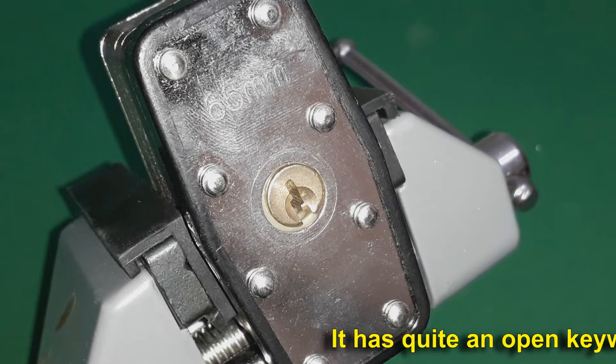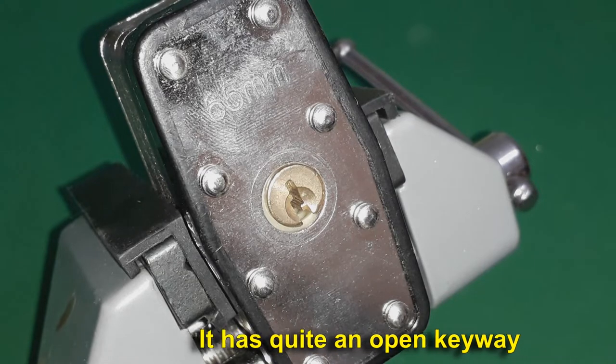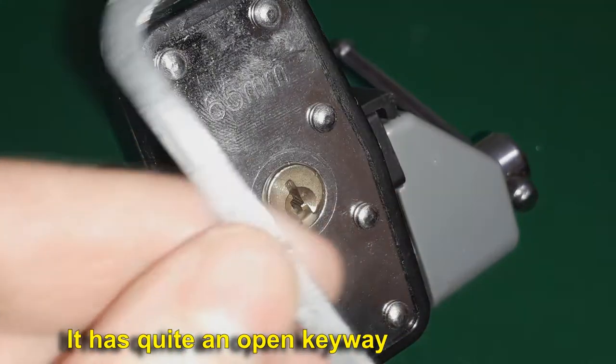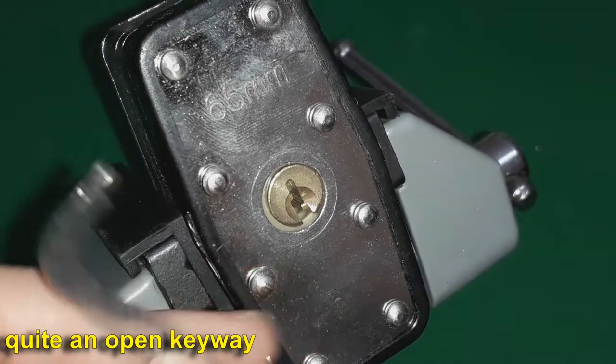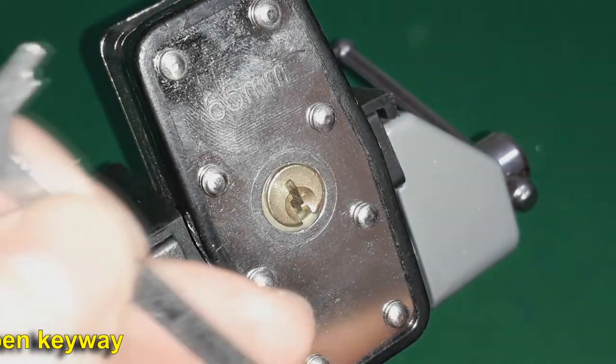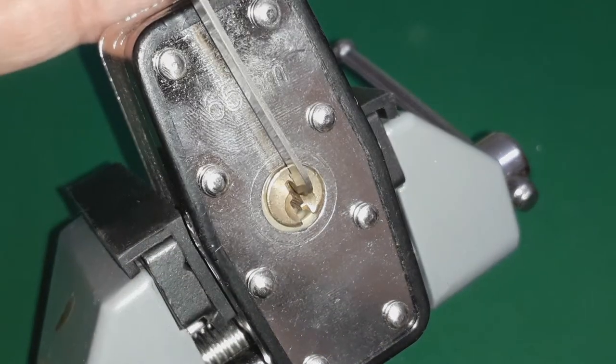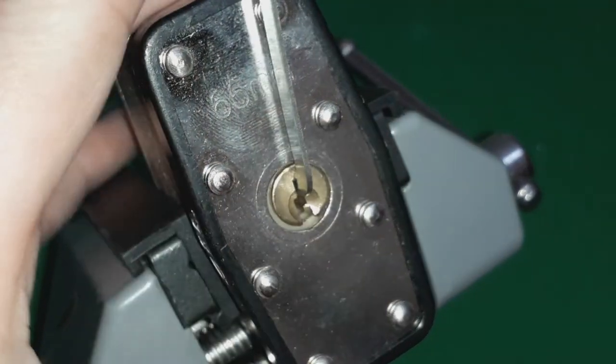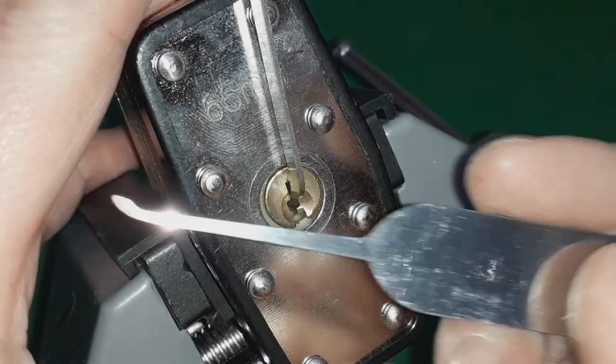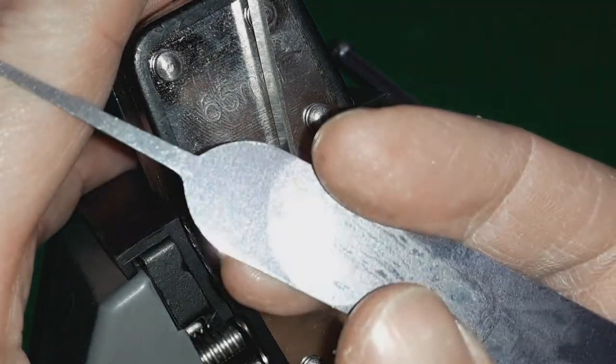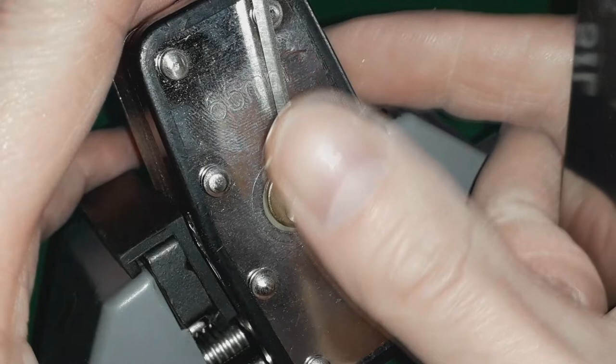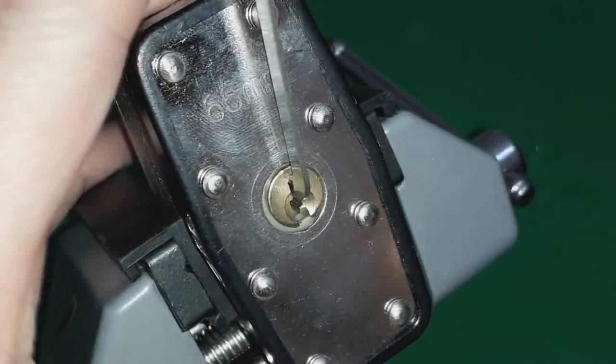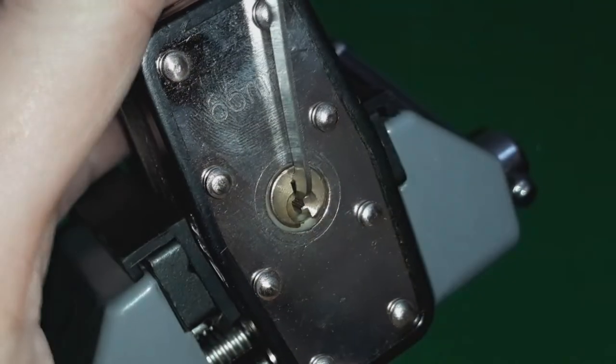So I'm choosing the top of the keyway and I think that's 33,000. I've picked this once. I'm using the Sparrow's monkey paw. I'm going to put, it's got a bit of tension on the core there, so I'm going to put a little bit of tension on it.